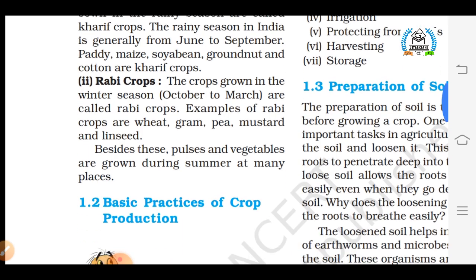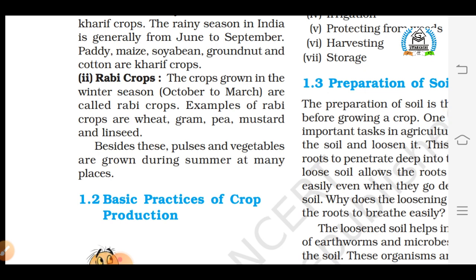The major Kharif crops are paddy, maize, soybean, groundnut, and cotton. The second group is Rabi crops. These crops are grown in the winter season because they require less water compared to Kharif crops. They are usually sown during October to November and harvested during March or April. The major Rabi crops are wheat, gram, pea, mustard, and linseed.